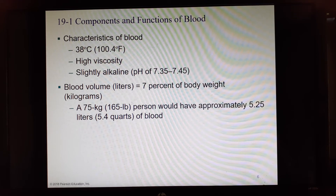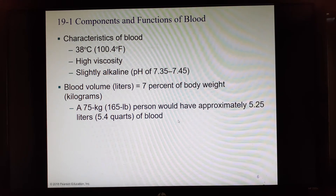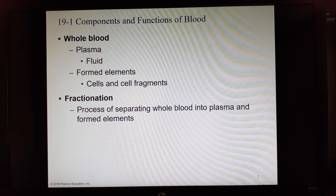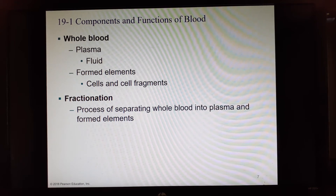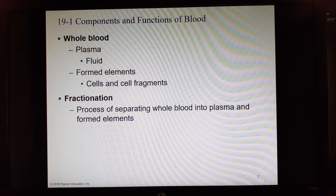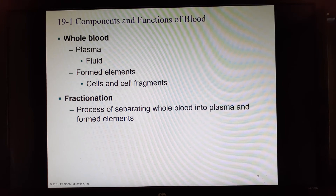About 7% of your body weight in kilograms equals how many liters of blood you have, so a 100–165 pound person would have about five and a quarter liters. Whole blood is the matrix — a straw or yellowish fluid called plasma — plus all the cells, which we call the formed elements.